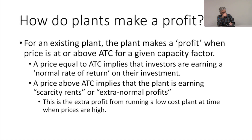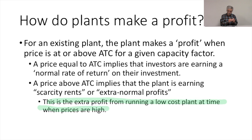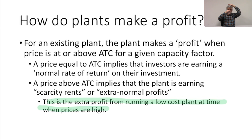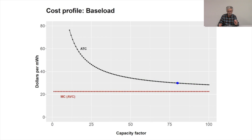This is the extra profit — the extra profit from running a low-cost plant at a time when prices are high. That's another way of thinking about scarcity rents. If you have a low-cost plant and it's running when prices are very high, then the difference between the plant's average variable cost, average total cost, and the price that the plant can actually get is called scarcity rents.